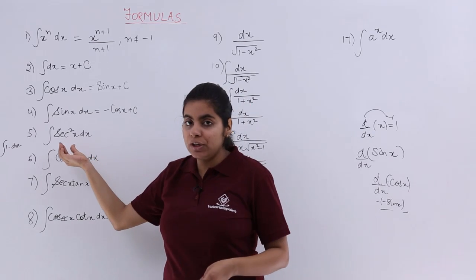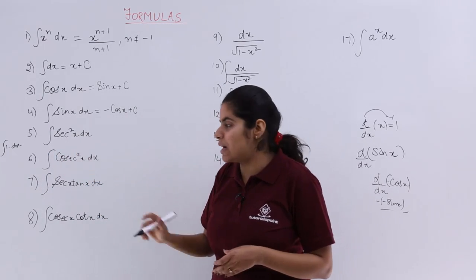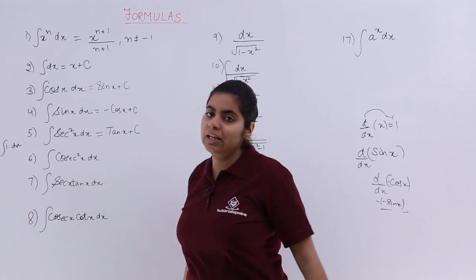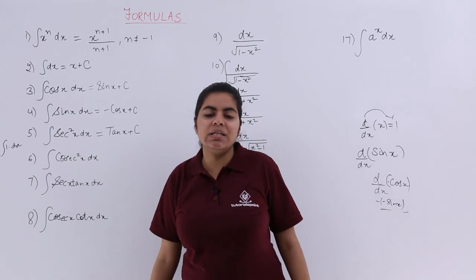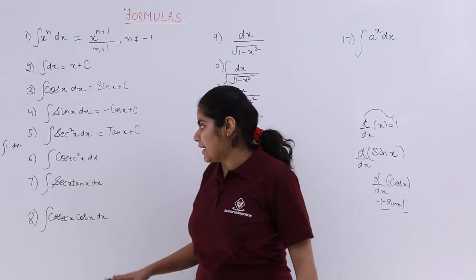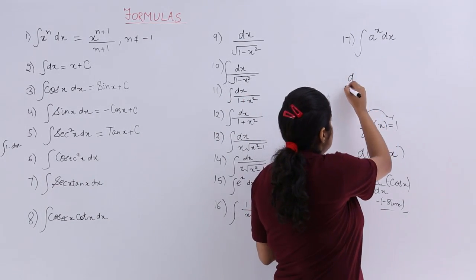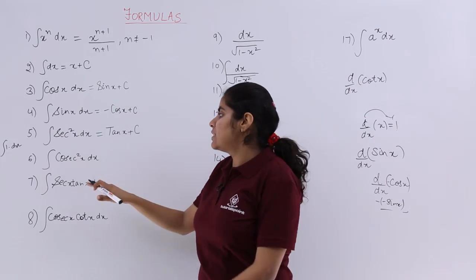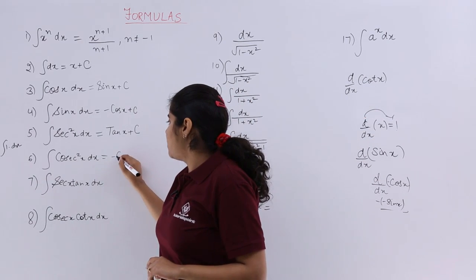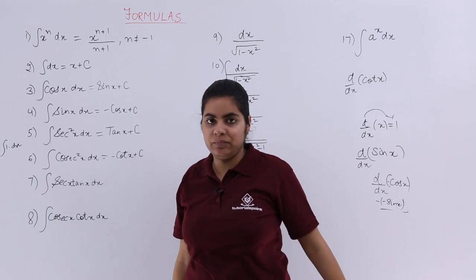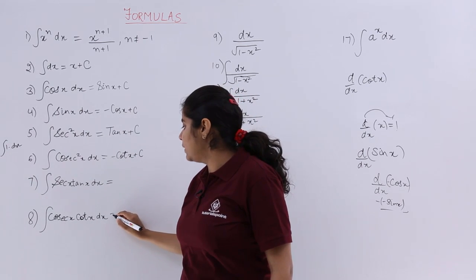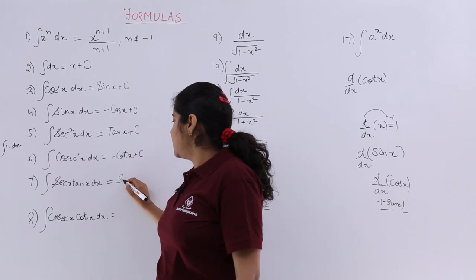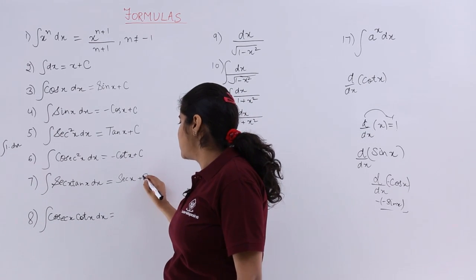Similarly, what to differentiate with respect to x in order to get sec²x? You know that tan x will give me sec²x on differentiation, so integration of sec²x equals tan x plus c. Next, what about cosecant square x? The differentiation of cot x is minus cosecant square x. Since we have only cosecant square x, the answer should be minus cot x plus c. Also, secant x tan x is obtained on differentiation of secant x, so integration of sec x tan x equals sec x plus c.